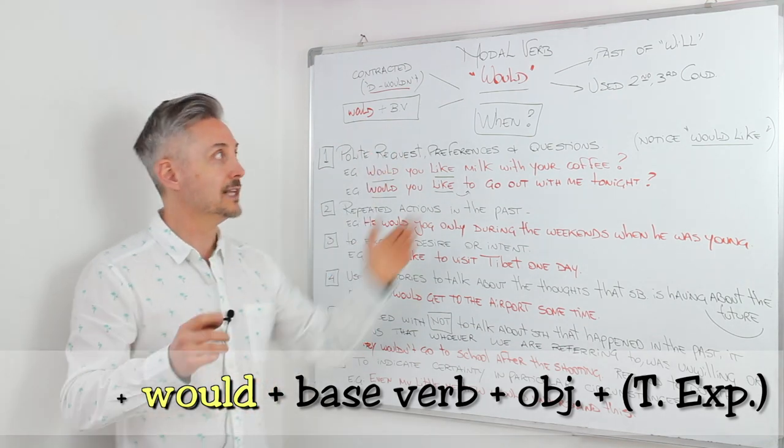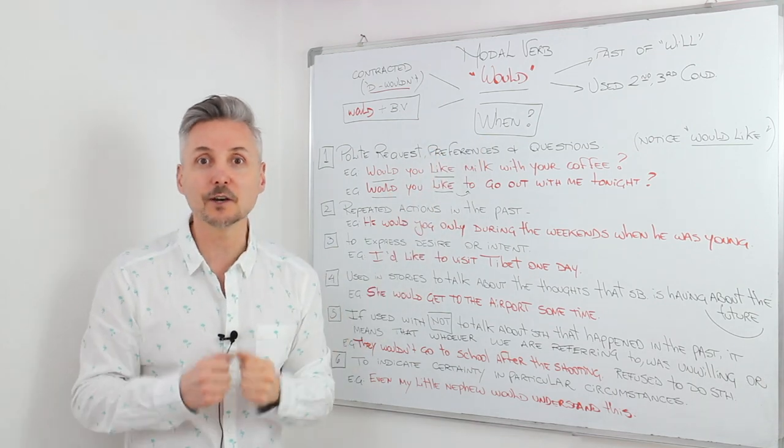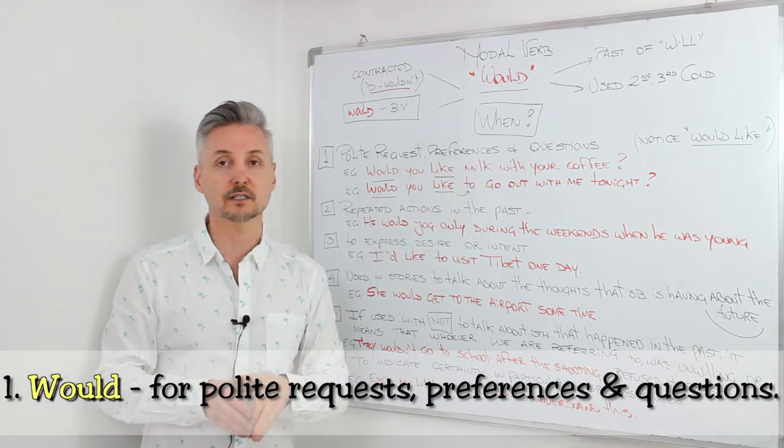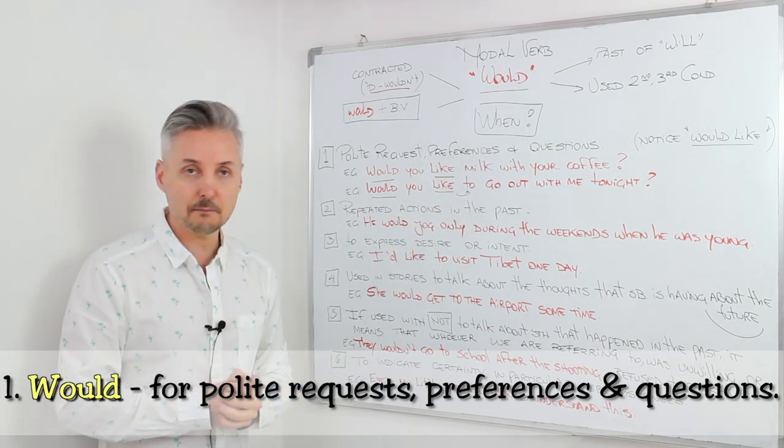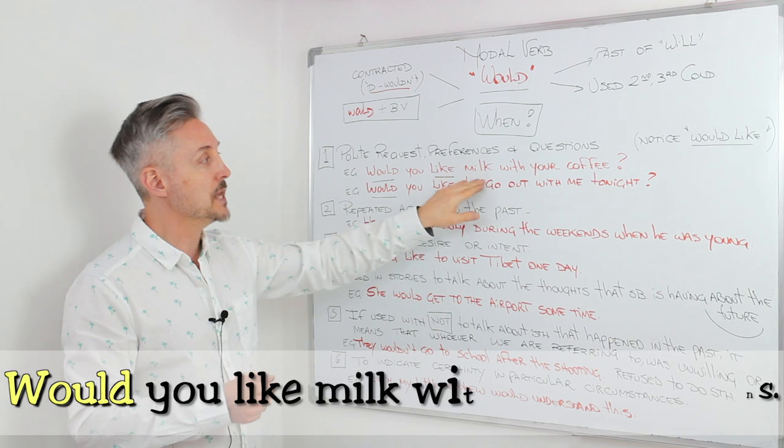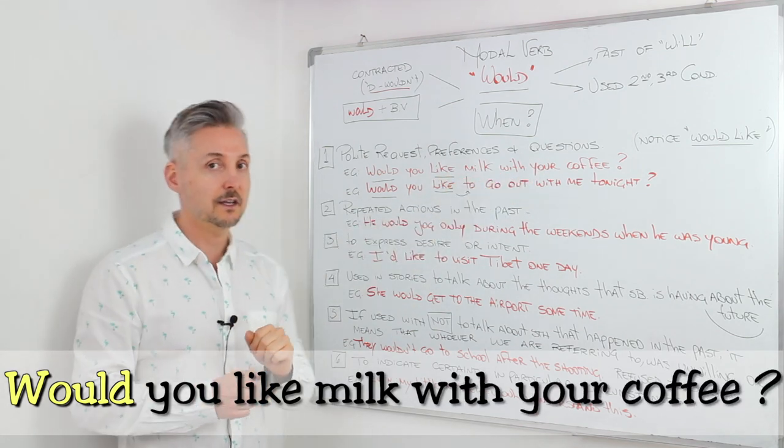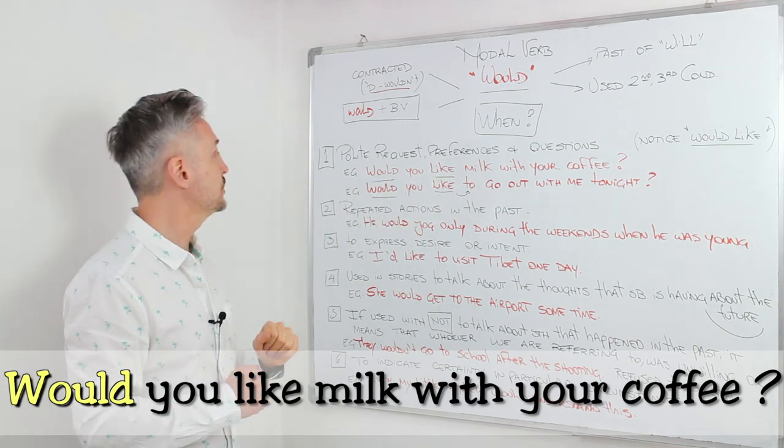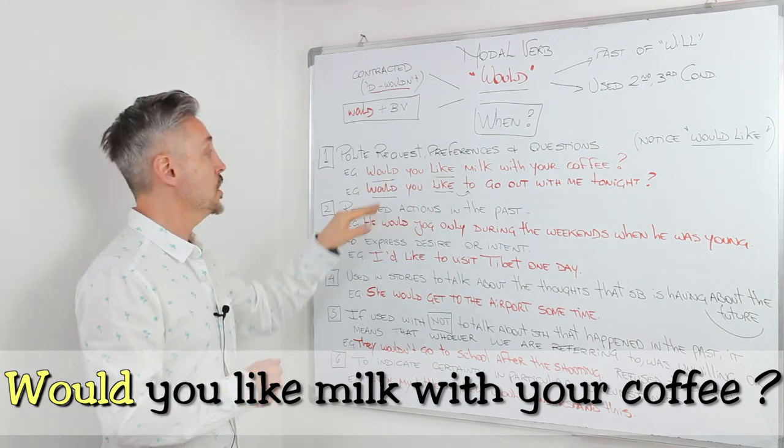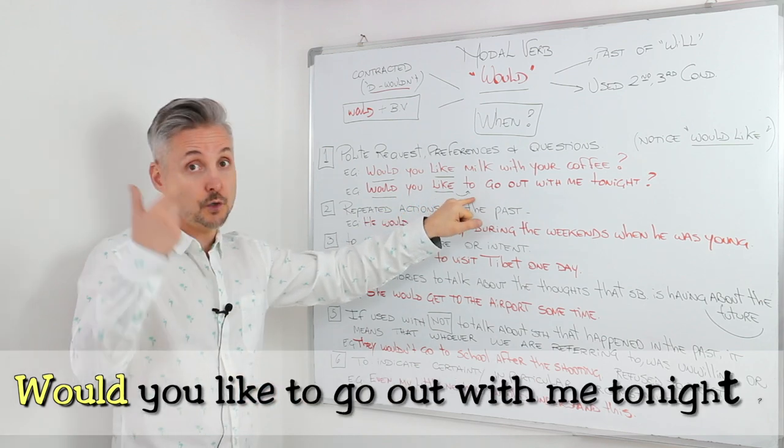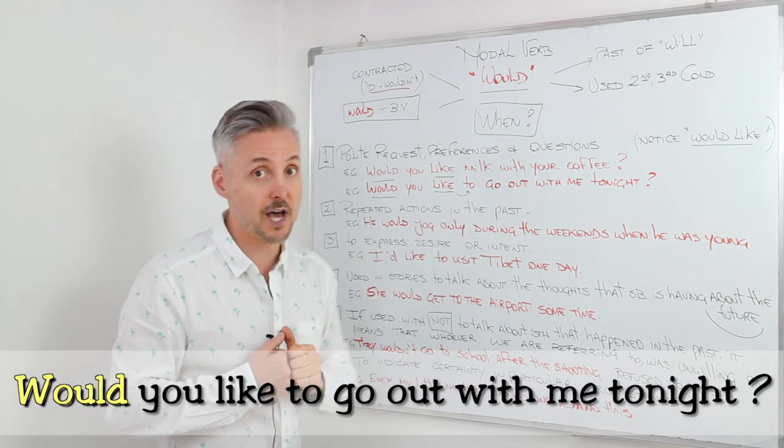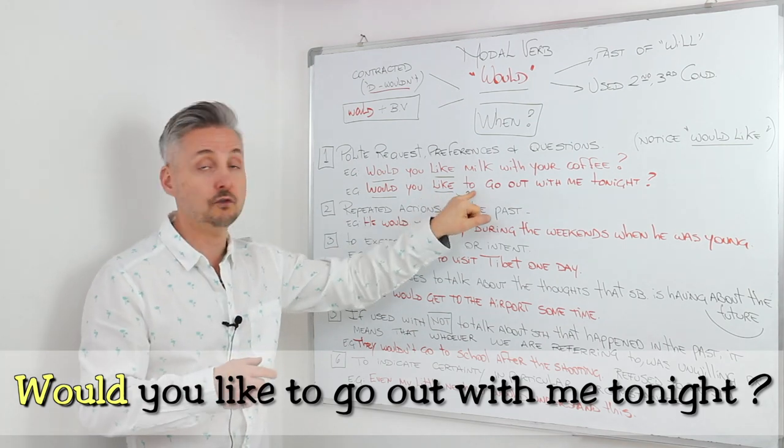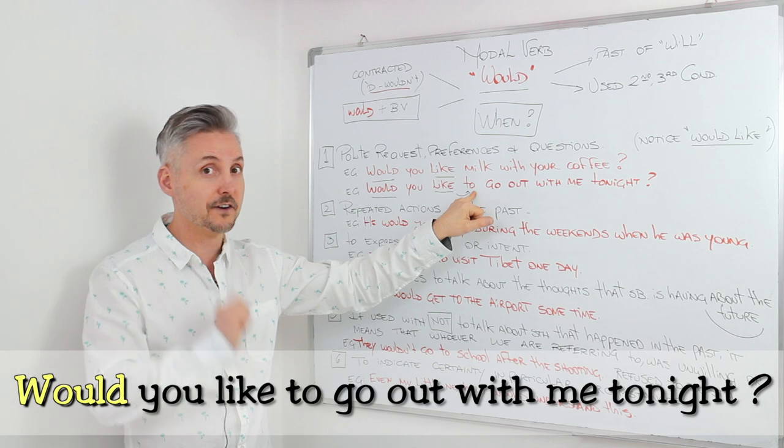So let's look at when we use would. First, for polite requests, preferences and questions. Like my example: Would you like milk with your coffee? This is very much used in English. Another example: Would you like to go out with me tonight? In this case, we have another verb after like, so we need to add to. Do not forget that.